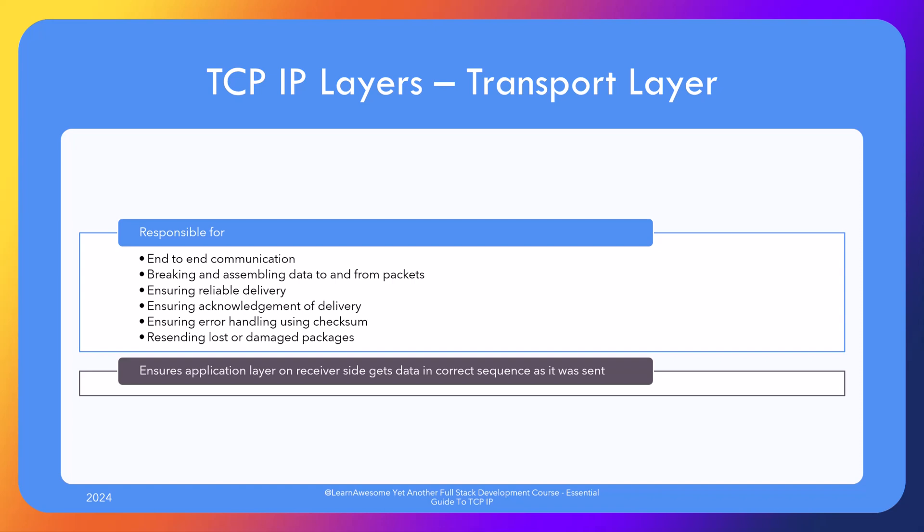The transport layer is responsible for end-to-end communication: breaking and assembling packets into and from manageable chunks, ensuring their reliable delivery — which includes making sure all packets are delivered to and acknowledged by the other party — as well as ensuring the packets are delivered intact, and the receiver is able to guarantee error-free delivery via a checksum mechanism. Finally, it also ensures the packets are delivered to the application layer in the exact same sequence they were sent.